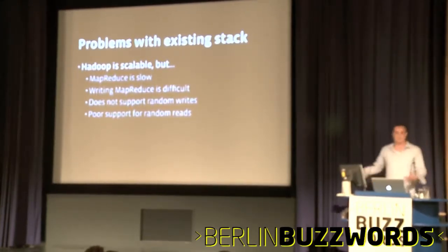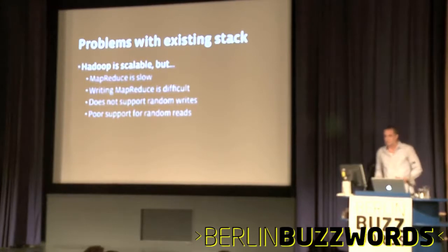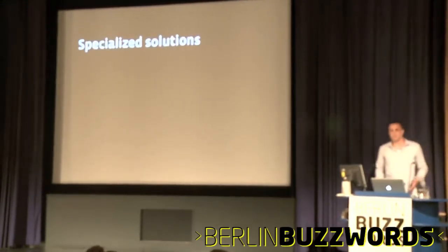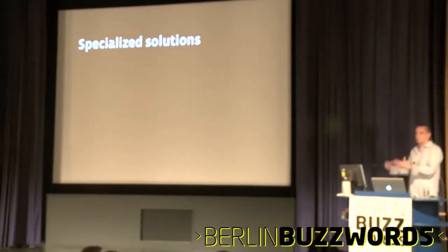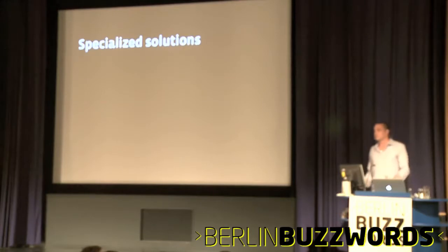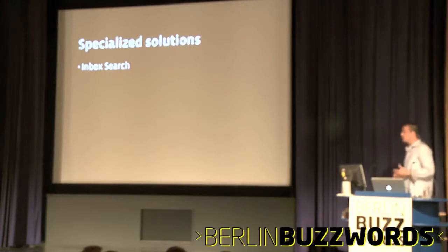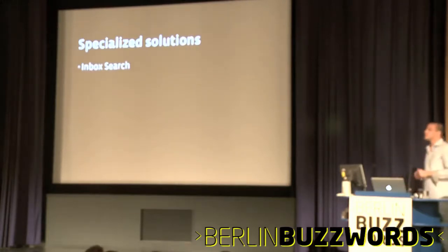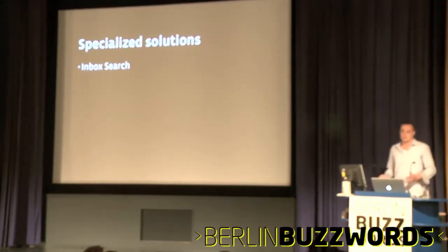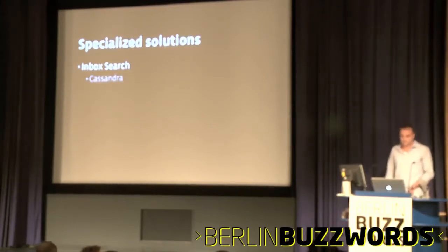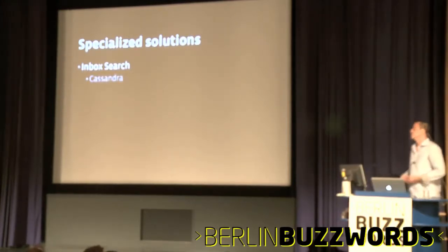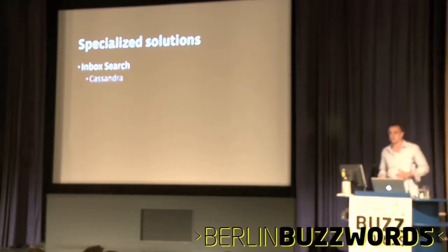These are not new things — but in the past couple of years, this has led to lots of specialized solutions. There's a very strong engineering culture at Facebook, and a lot of teams are really smart and just build their own solutions to their own problems. So we've ended up with a lot of different systems. For example, Inbox Search — this is not the new messaging, but the old messaging was based on Cassandra. Cassandra was actually built at Facebook for Inbox Search, basically because MySQL and our existing systems were not well-suited for it.